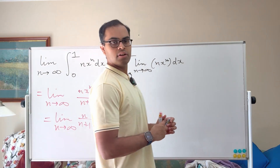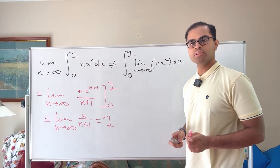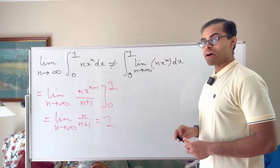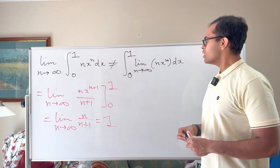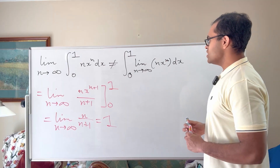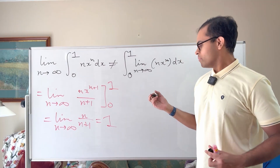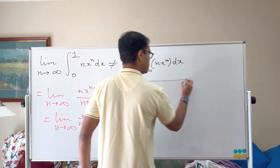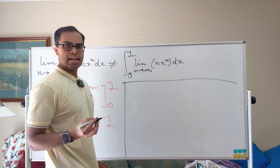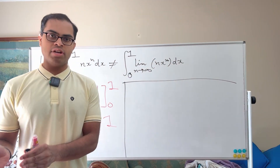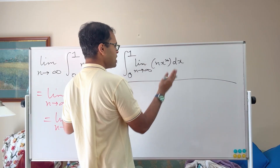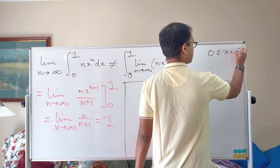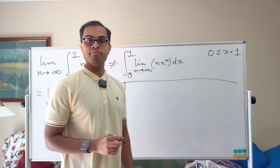Now what about the right-hand side? We have a function of x to figure out. We need to find: what is the limit as n goes to infinity of nx to the n? We're fixing x and finding that limit, and we're interested in 0 ≤ x < 1 as the domain of our functions.